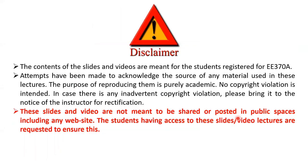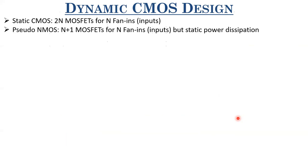Let us look at the dynamic CMOS design in detail. Static CMOS required 2n MOSFETs for n inputs. To reduce the transistor count, we moved to pseudo-NMOS logic, which required n+1 MOSFETs for n fan-ins. But because of that unconditional load, there was static power dissipation. We also looked at pass transistor logic and transmission gate logic.